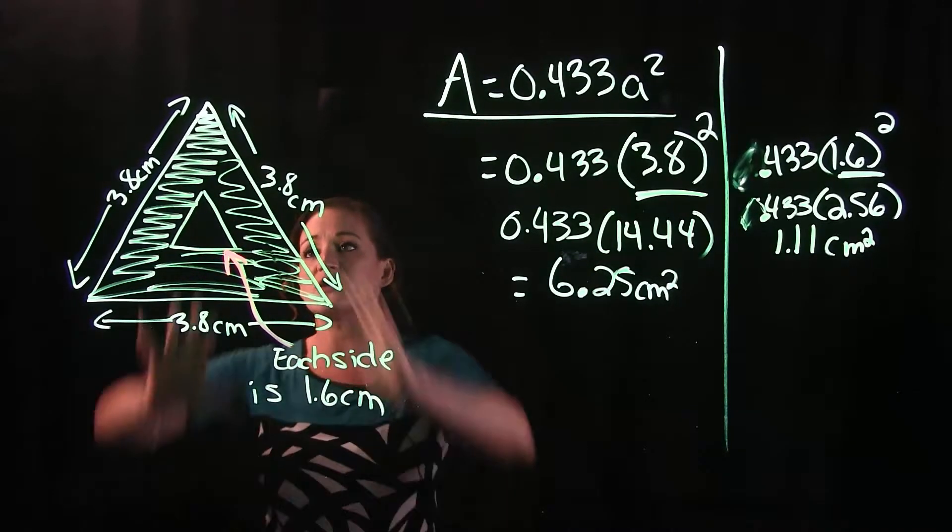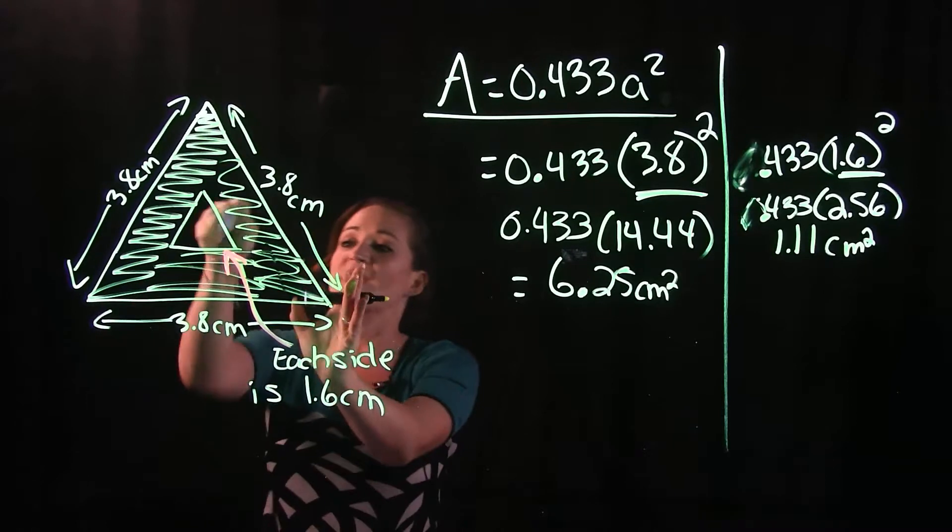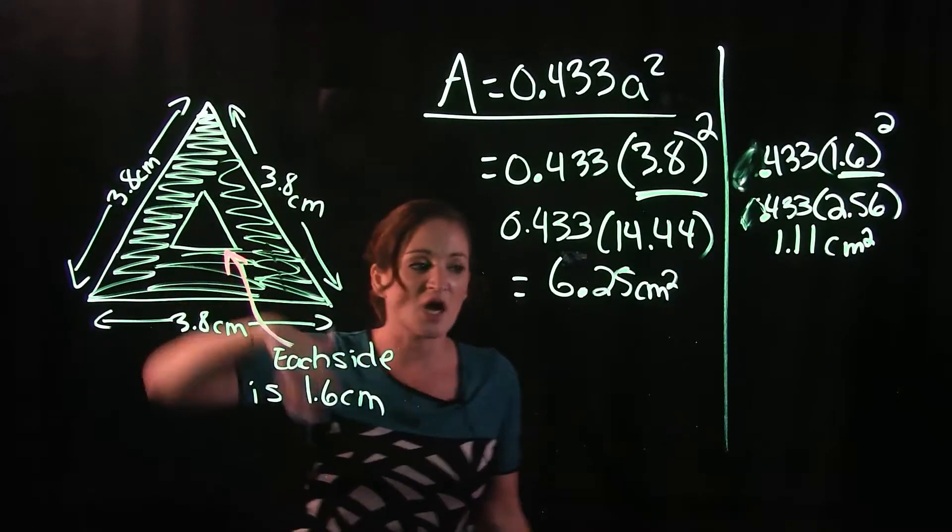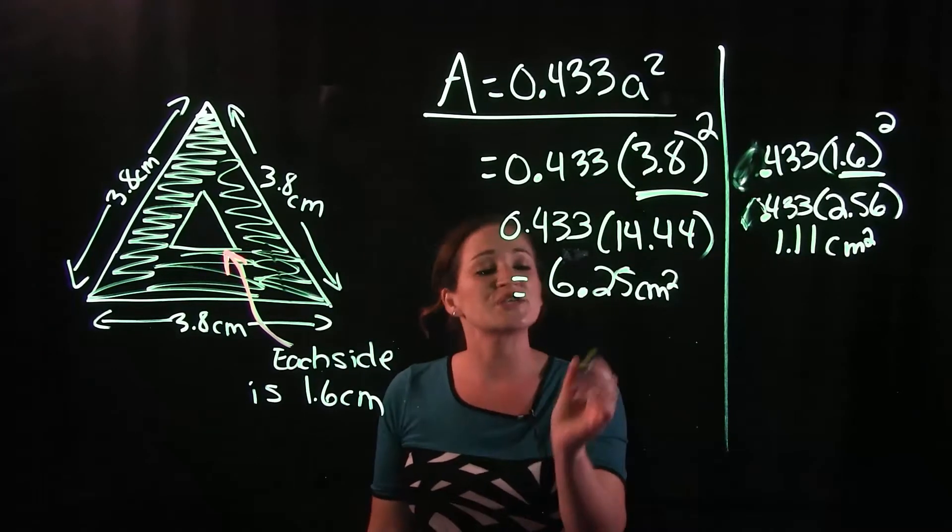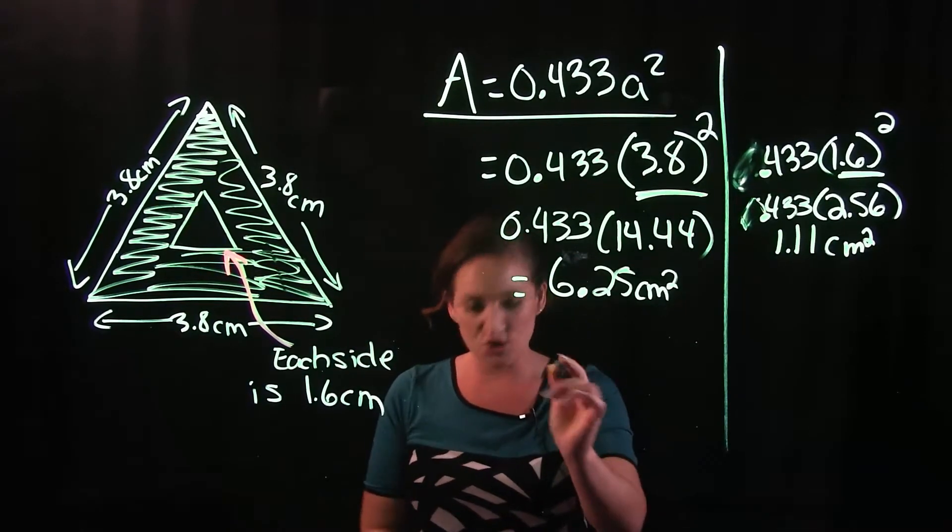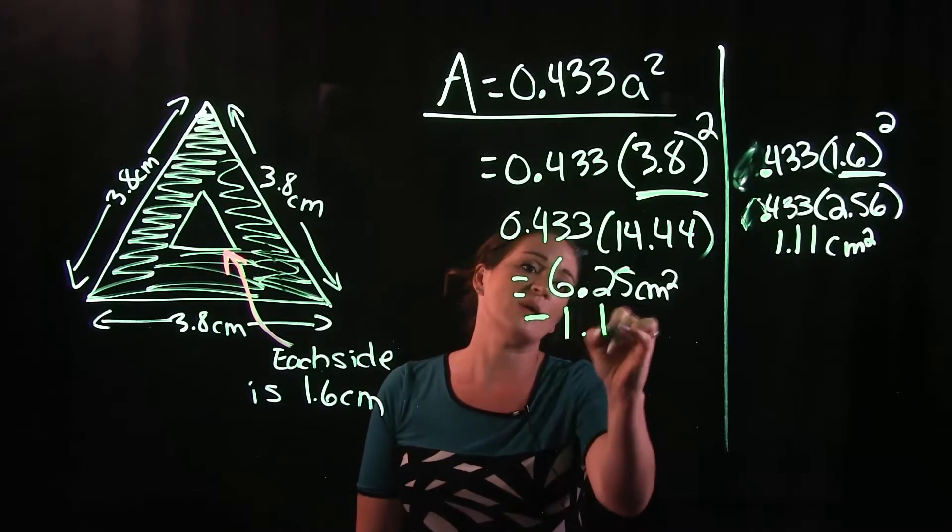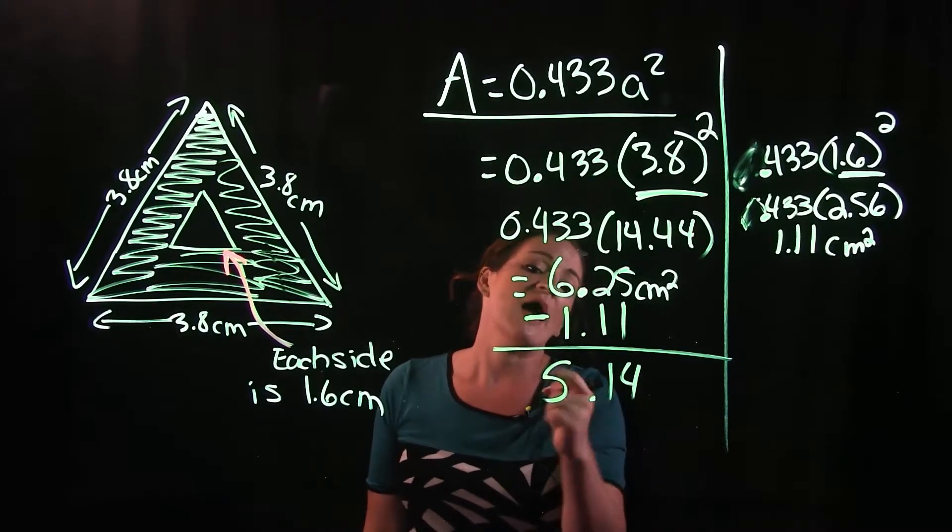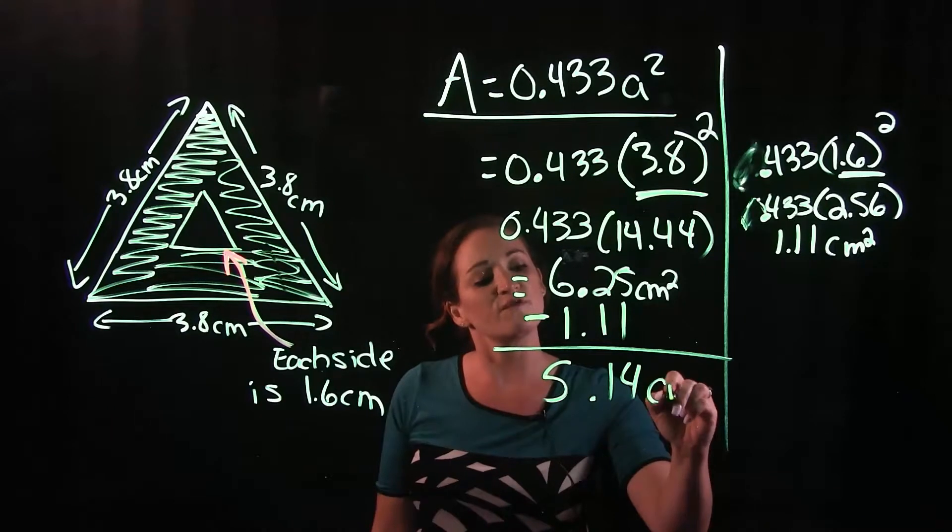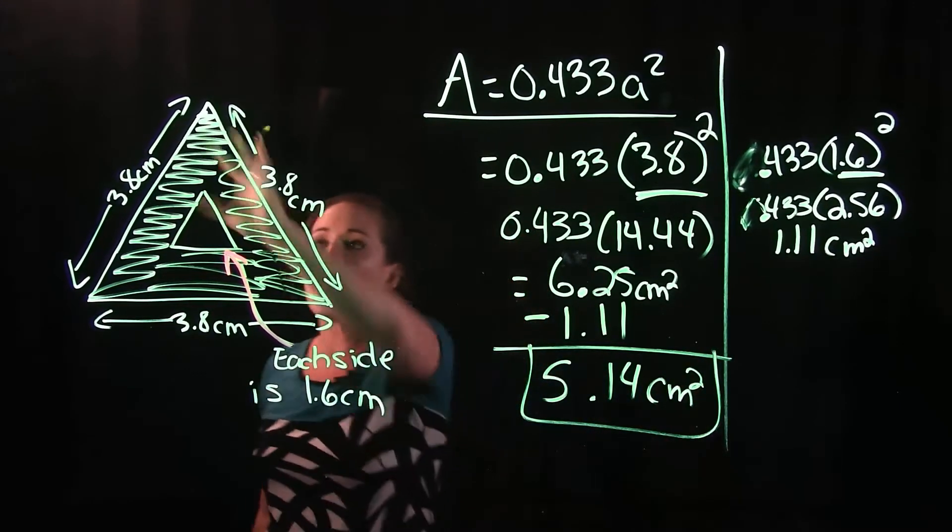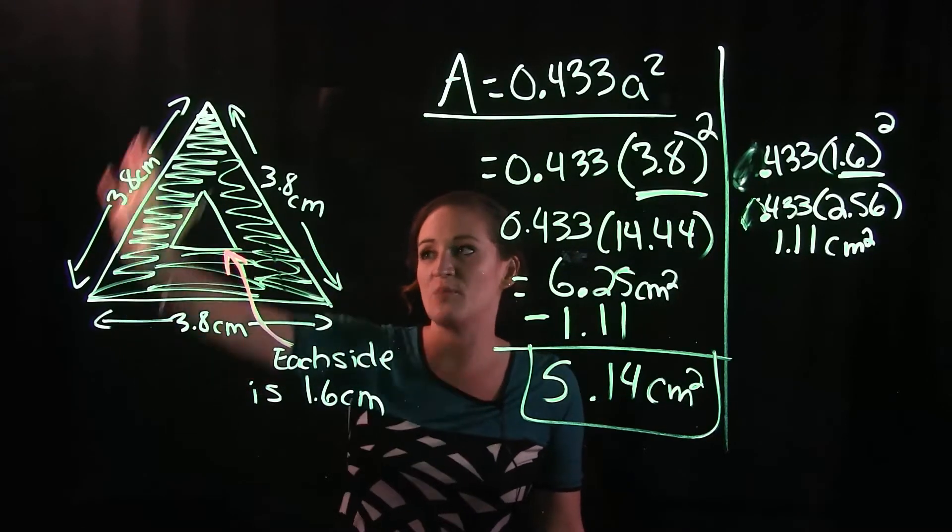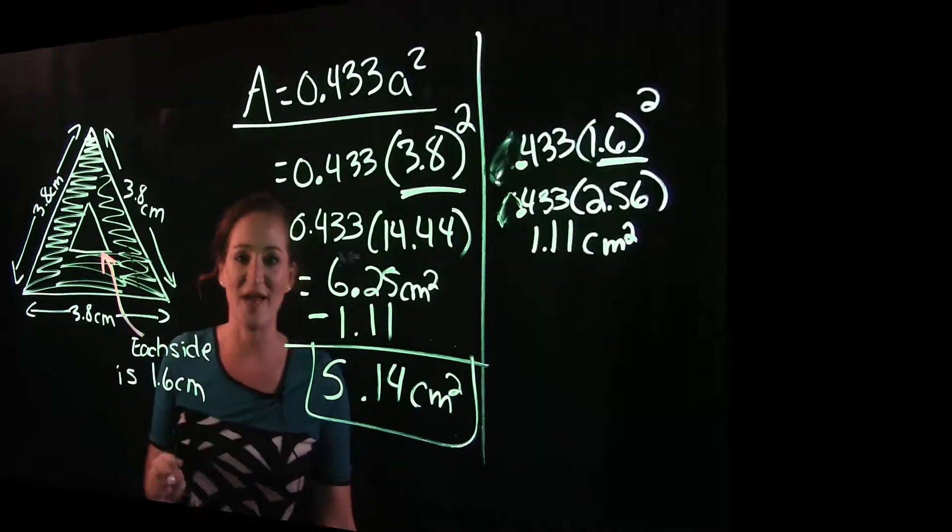Now what we are going to do here. We have the area of the big one. We're going to take away the area of the middle piece so that we know the area of our shaded region. That's just a matter of taking 6.25 minus 1.11. And when we subtract that here, I'm getting 5.14 centimeters squared. That is going to be the area of this shaded portion here for our triangle.